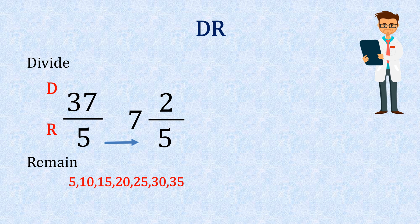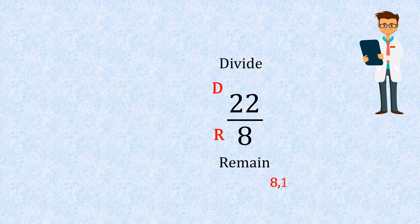Next, we have 22 eighths. OK, eight goes into 22 twice, giving us two as our whole number and there's six left over and the eight remains at the bottom, giving us two and six eighths.